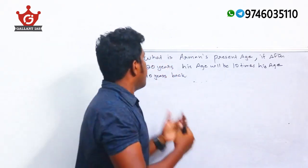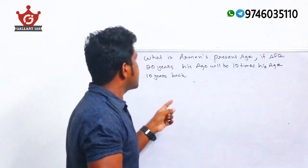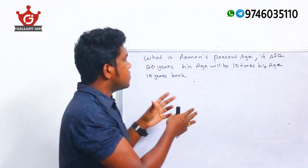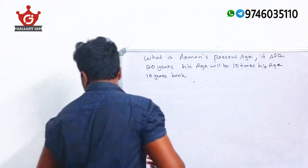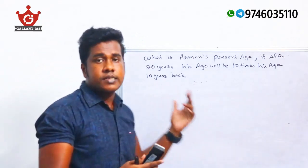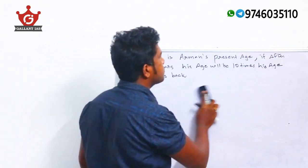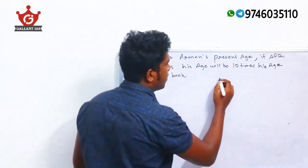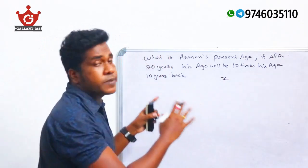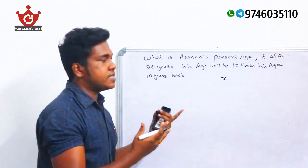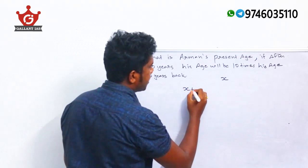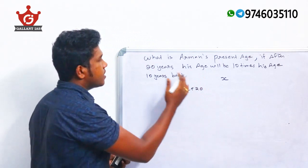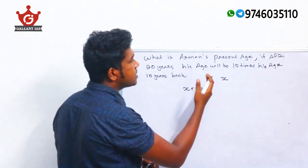Now the next question: What is Ahmad's present age if after 20 years his age will be 10 times his age 10 years back? Let the present age of Ahmad be X. After 20 years Ahmad's age will be X + 20.